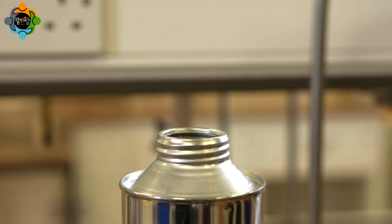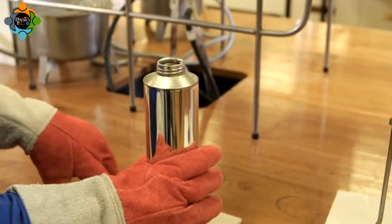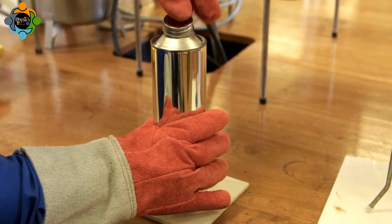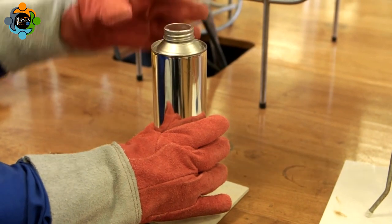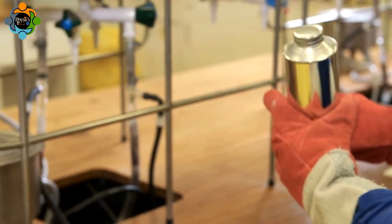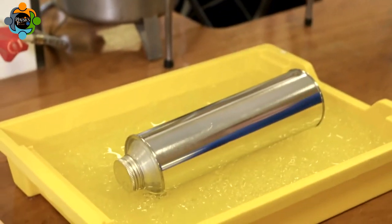Once steam is produced, the can is quickly but safely removed from the heat. The lid is placed on the can and tightened. The can is then placed into the iced water.